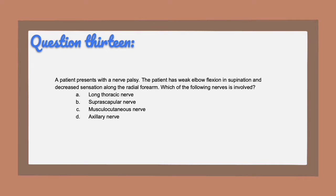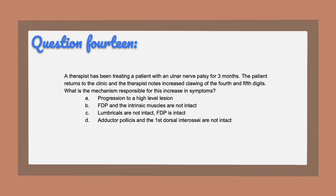Question thirteen: a patient presents with a nerve palsy. The patient has weak elbow flexion and supination and decreased sensation along the radial forearm. Which of the following nerves is involved? A, long thoracic nerve. B, suprascapular nerve. C, musculocutaneous nerve. Or D, axillary nerve. Question fourteen: a therapist has been treating a patient with an ulnar nerve palsy for three months. The patient returns to the clinic and the therapist notes increased clawing of the fourth and fifth digits. What is the mechanism responsible for this increase in symptoms? A, progression to a high-level lesion. B, FDP and the intrinsic muscles are not intact. C, lumbricals are not intact and FDP is intact. Or D, adductor pollicis and the first dorsal interossei are not intact.